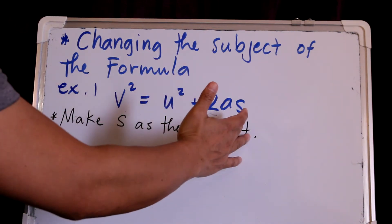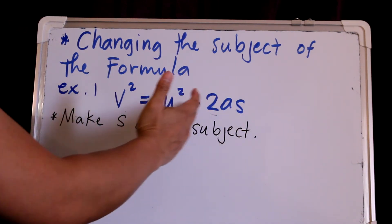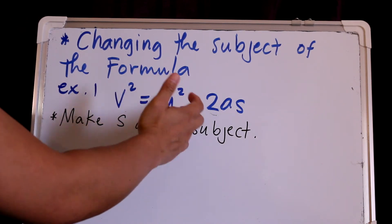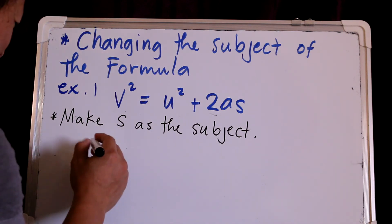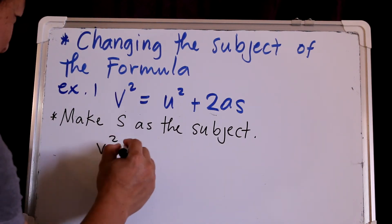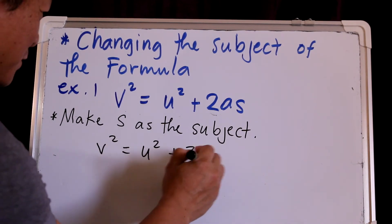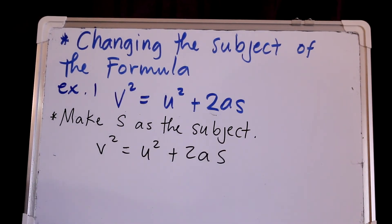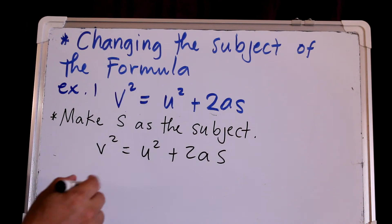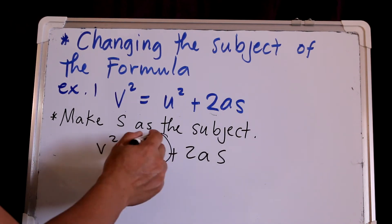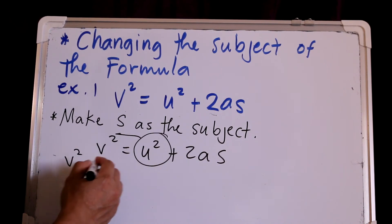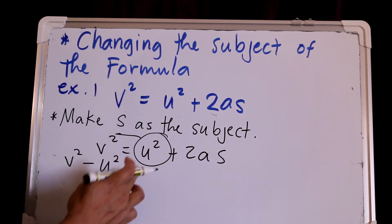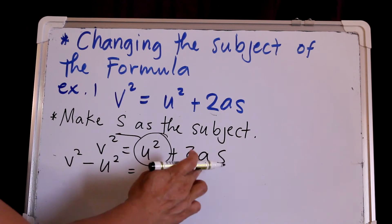So except for S, we are going to transfer 2A and U squared to the other side of the equation. Starting with V squared equals U squared plus 2AS — the first thing we transfer is U squared because it's being added, so it becomes V squared minus U squared on the other side.